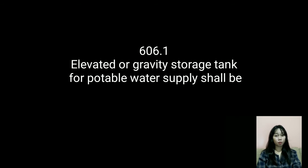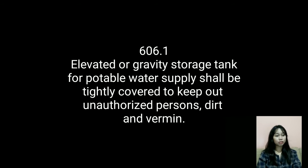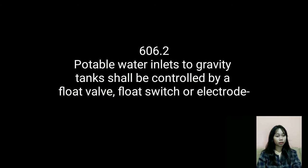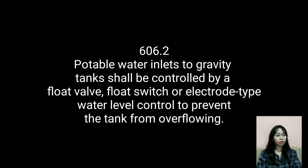In Section 606.1, elevated or gravity storage tanks for potable water supply shall be tightly covered to keep out unauthorized persons, dirt, and contaminants. The covers of gravity tanks shall be vented with a return vent pipe having an area not less than the area of the down-feed riser pipe, and the vent shall be screened with a fine corrosion-resistant screen with openings not less than 14 nor more than 18 mesh per 25 mm. In Section 606.2, potable water inlets to the gravity tank shall be controlled by a float valve, float switch, or electrode-type water level control to prevent the tank from overflowing.